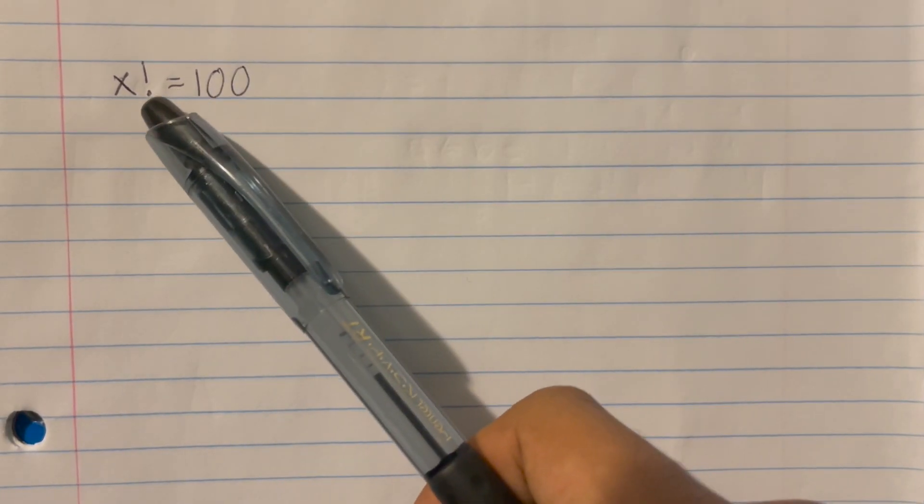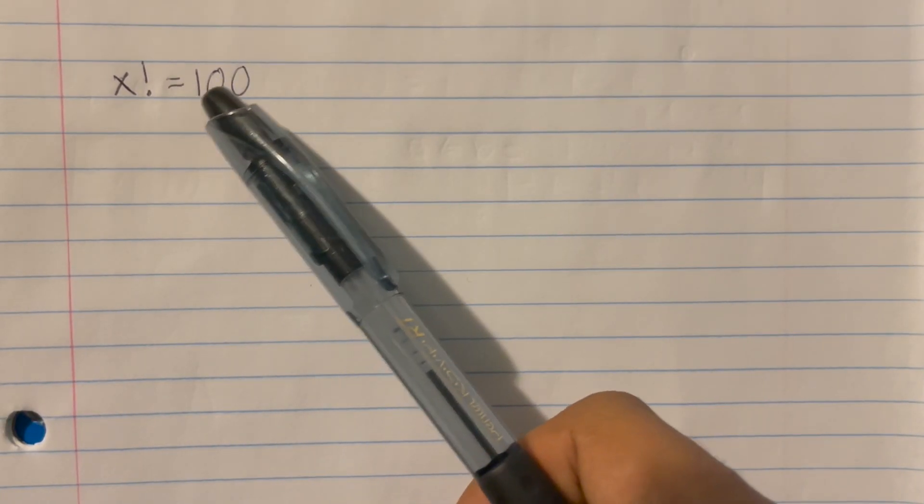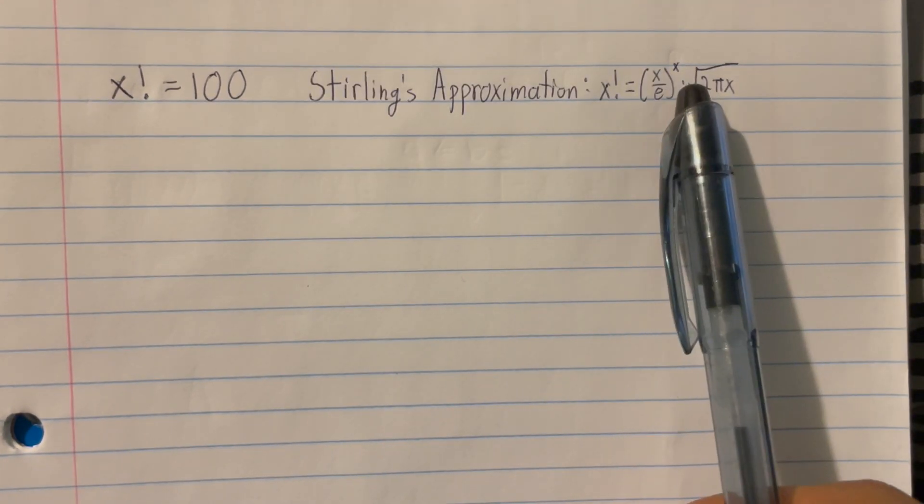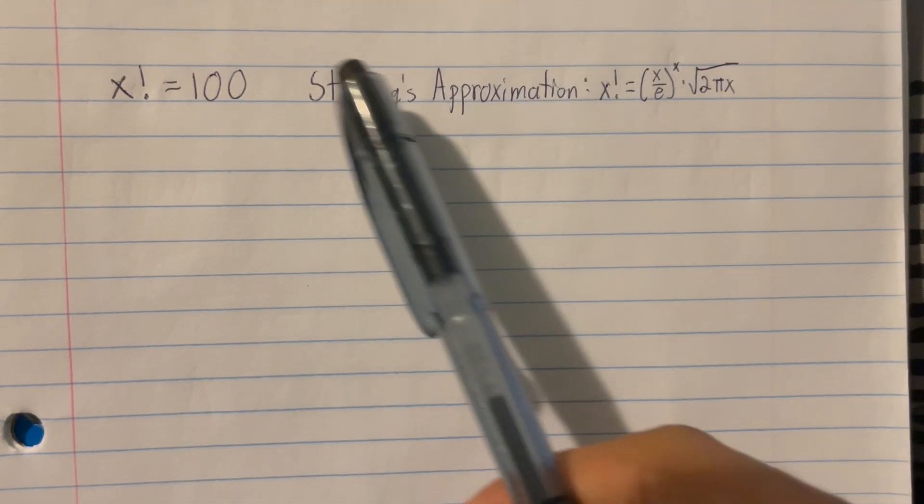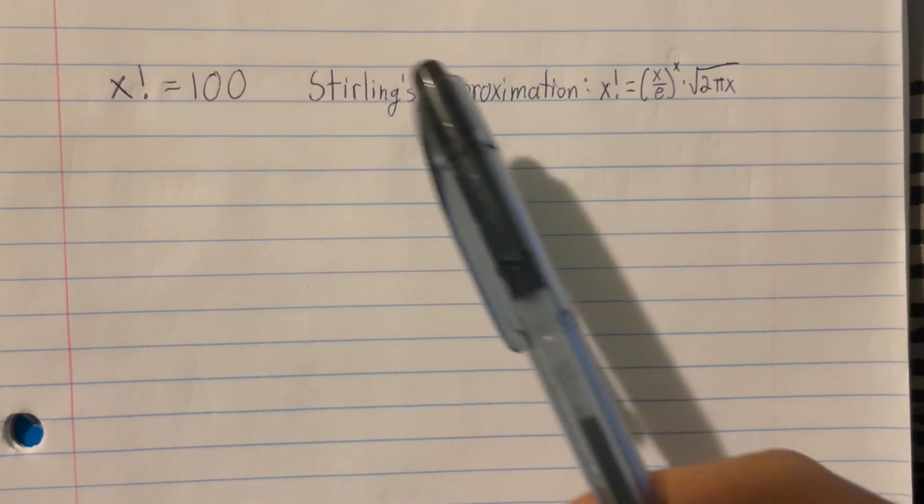What if you wanted to solve the equation x factorial equals 100? Obviously, you can just plug it into Wolfram Alpha and get an answer immediately, but what if you wanted to solve it algebraically? What would you do then? Well, this is where you have to apply Stirling's approximation — a way you can approximate factorials.